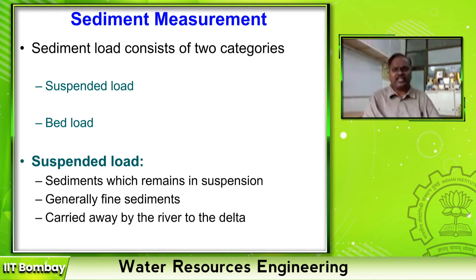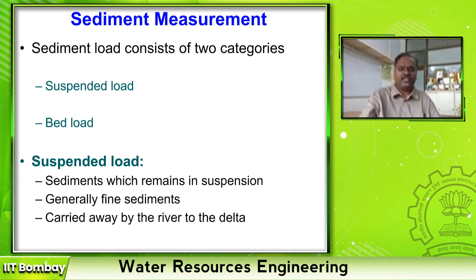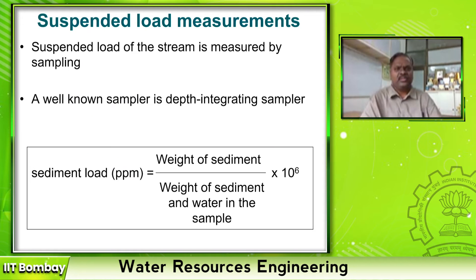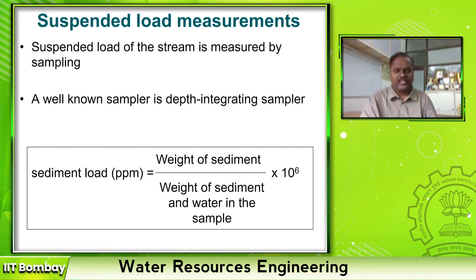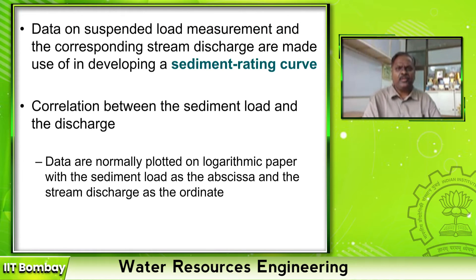The sediment load consists of two categories: suspended load and bed load. The suspended load, which remains in suspension, generally consists of fine sediments carried away by the river to the delta. The suspended load in the stream is measured by sampling — take one litre of water, filter it, find out the sediment trapped, and express the weight of sediment to weight of sediment and water as a percentage, in PPM. The data on suspended load measurement and corresponding stream discharge is called the sediment rating curve.